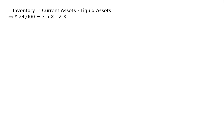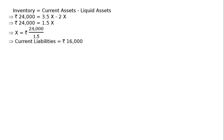So, Rs 24,000 is equal to 3.5X minus 2X, which gives 1.5X is equal to Rs 24,000. Therefore, X is equal to Rs 24,000 divided by 1.5. Since X was assumed to be current liabilities, current liabilities equals Rs 16,000.